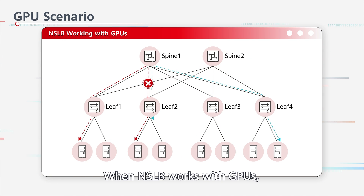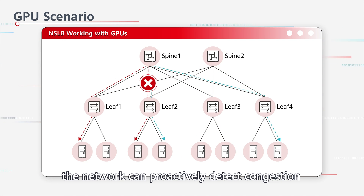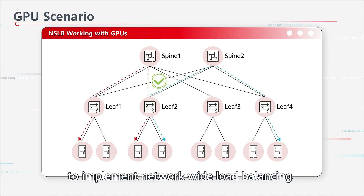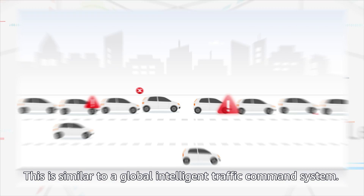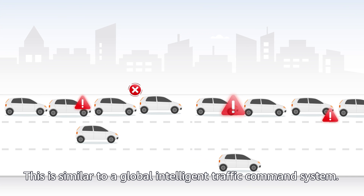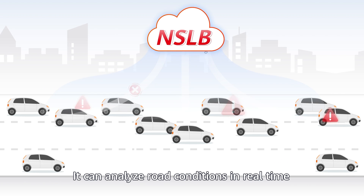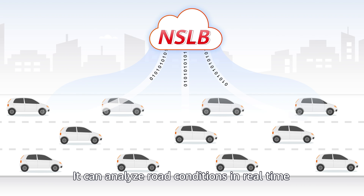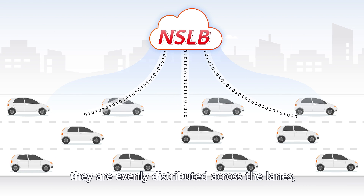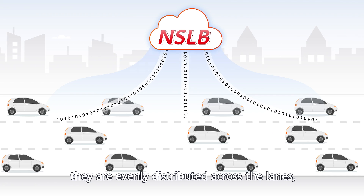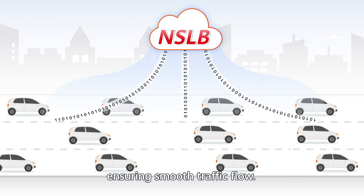When NSLB works with GPUs, the network can proactively detect congestion and automatically switch paths to implement network-wide load balancing. This is similar to a global intelligent traffic command system — it can analyze road conditions in real time and divert vehicles so that they are evenly distributed across the lanes, ensuring smooth traffic flow.